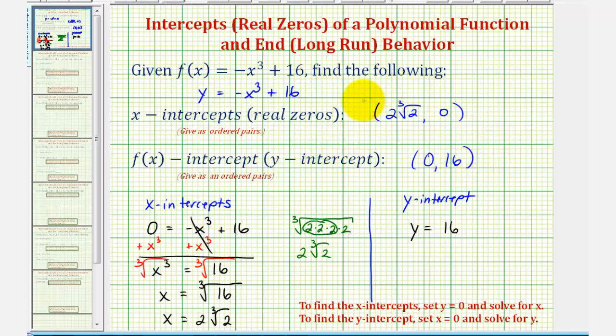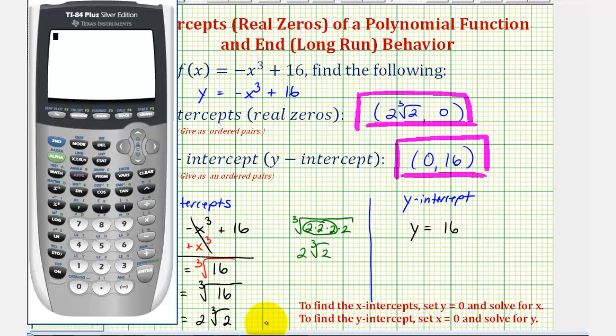Now let's go ahead and verify our x-intercept and our y-intercept, or f of x-intercept, using the graphing calculator. To verify the x-intercept though, we will have to convert two times the cube root of two to a decimal approximation. Let's do this from the home screen. So we're going to press two, and then math, and then option four for cube root, and then two, close parenthesis, enter. So the x-intercept will be approximately two point five two.